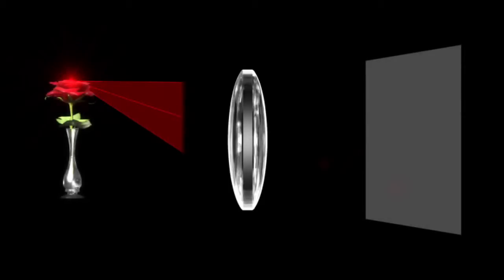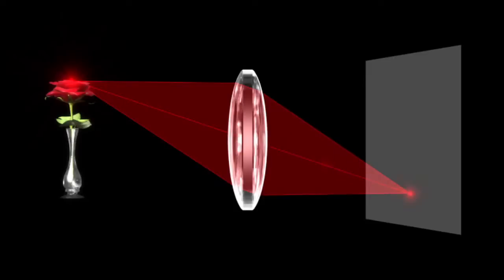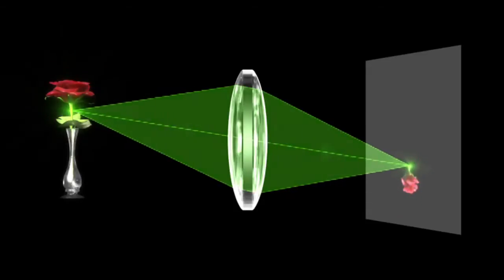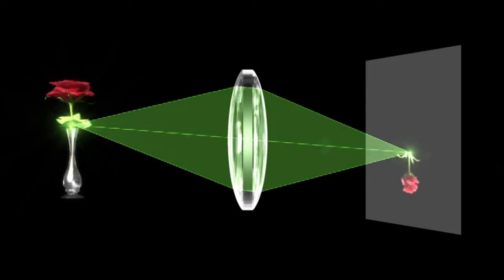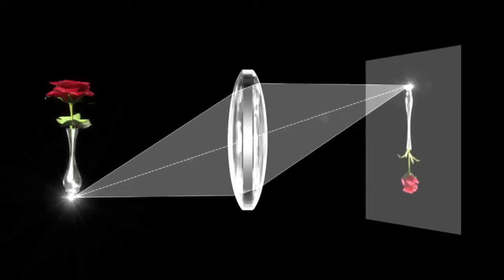Why is an image created when light passes through the lens? Light transmitted from a single point on a flower passes through the lens and meets at a single point. Light transmitted from other points is concentrated in the same way, creating an image.